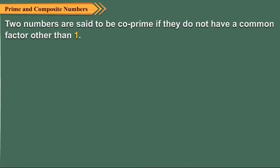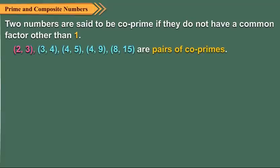Two numbers are said to be co-prime if they do not have a common factor other than 1. For example, (2, 3), (3, 4), (4, 5), (4, 9), (8, 15) are pairs of co-primes.